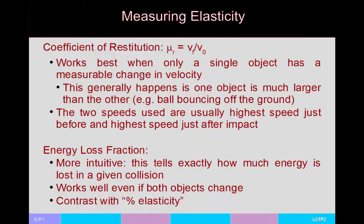If the coefficient of restitution is 1, you have a perfectly elastic collision and energy is conserved. If it's 0, the ball hits the ground and sticks — no bounce at all. You can also use the relative speed between two objects when both are measurably affected by the collision. For two billiard balls, a coefficient of 1 means energy is totally conserved; a coefficient of 0 means the two objects stick together.